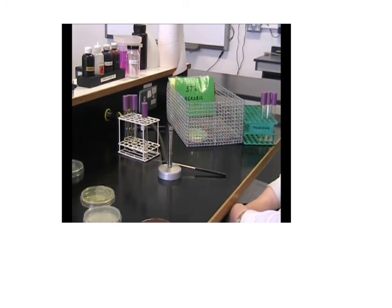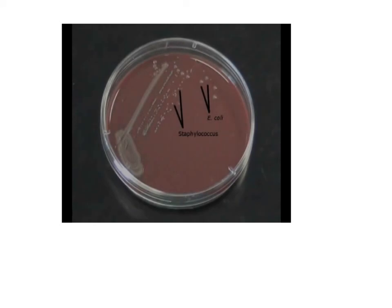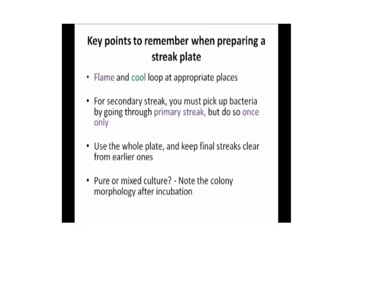Remember, your incubation conditions will define which bacteria you recover. We shall put the plates in an incubator for the required length of time. This is normally overnight at 37 degrees C for clinical and mammalian samples, and 25 degrees C for several days for environmental samples. Following incubation, you should be able to see single isolated colonies. On this chocolate blood agar plate you can see different colony morphologies. On this plate you can see the small off-white colonies of Staphylococcus and the larger smooth colonies of E. coli.